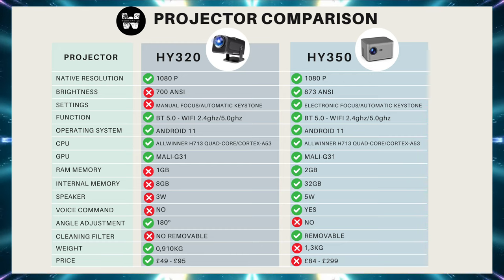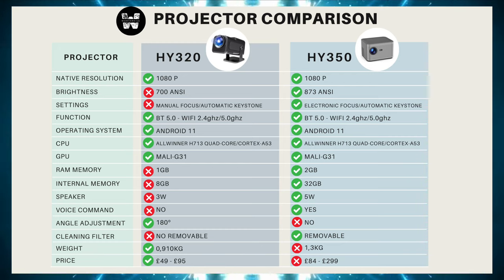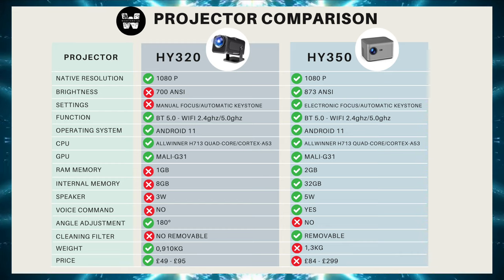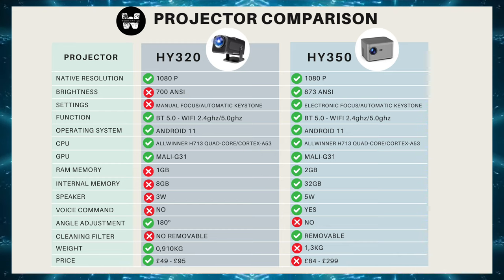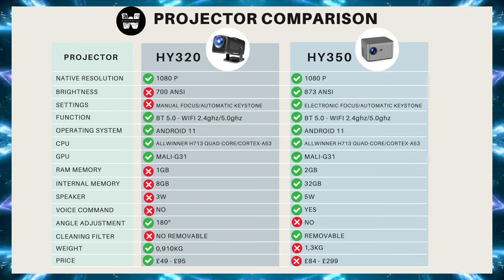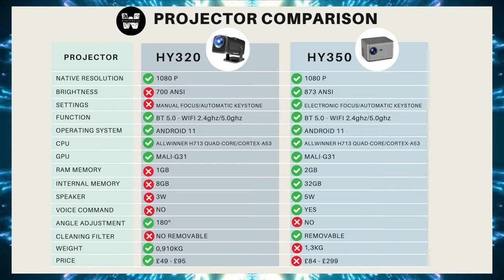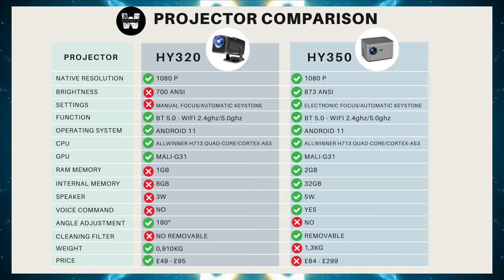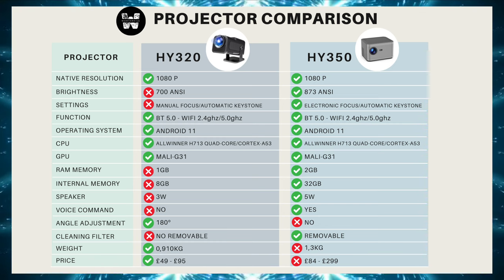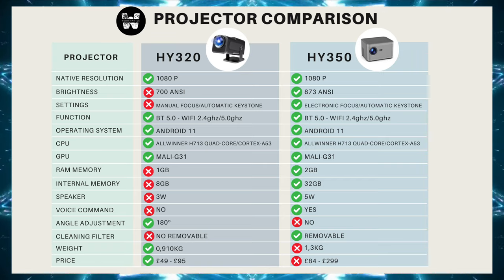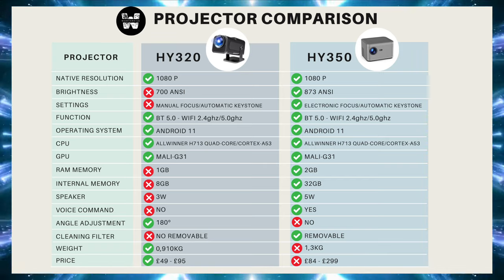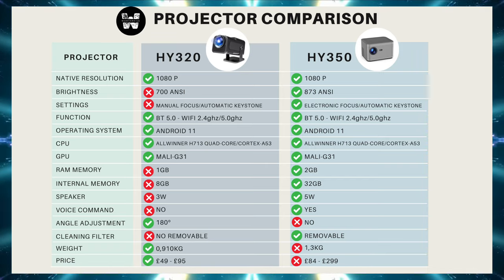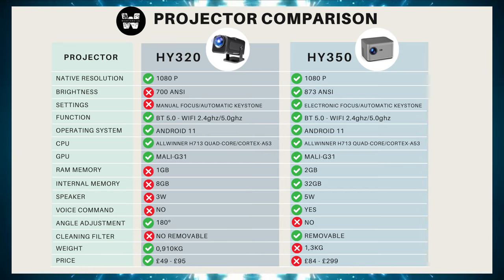About the speakers, these mid-range projectors struggle with this, so if you have a Bluetooth speaker or some other speaker to connect to the auxiliary input, that's the best option. But the HY350 has a 5W speaker and better sound dispersion because it's larger, whereas the HY320 has a 3W speaker, and since it's smaller the sound isn't as clear. So a point goes to the HY350.